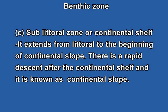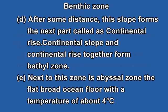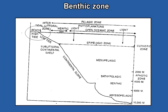The sub-littoral zone extends from the littoral to the beginning of the continental slope. After the continental shelf, there is a rapid descent forming the continental slope. After some distance, this slope forms the continental rise. Continental slope and continental rise together form the bathyal zone. After that comes the abyssal zone, which is the flat, broad ocean floor with a temperature of about 4 degrees centigrade.